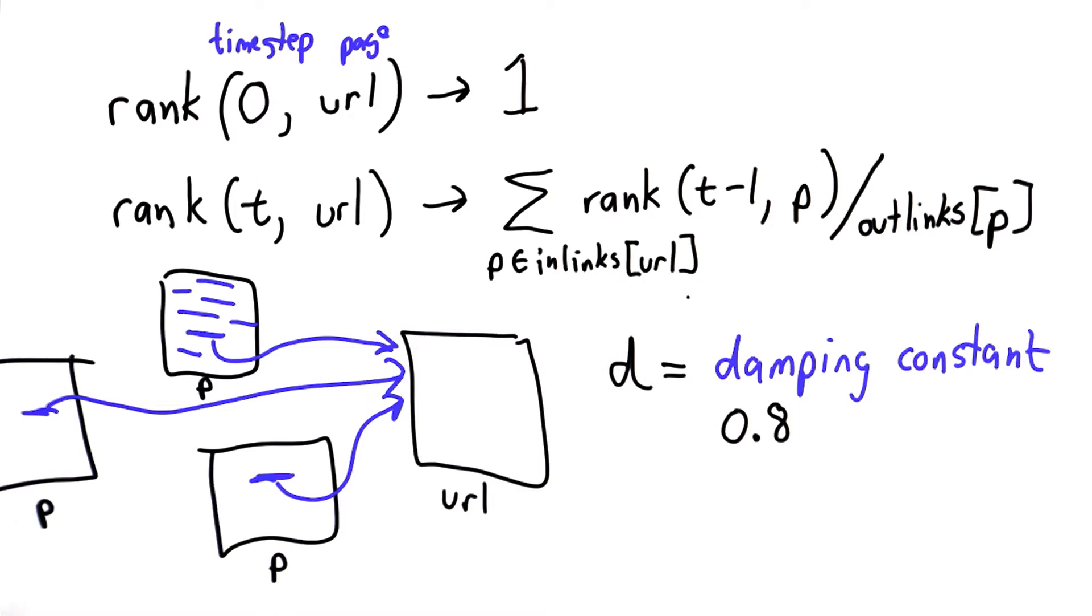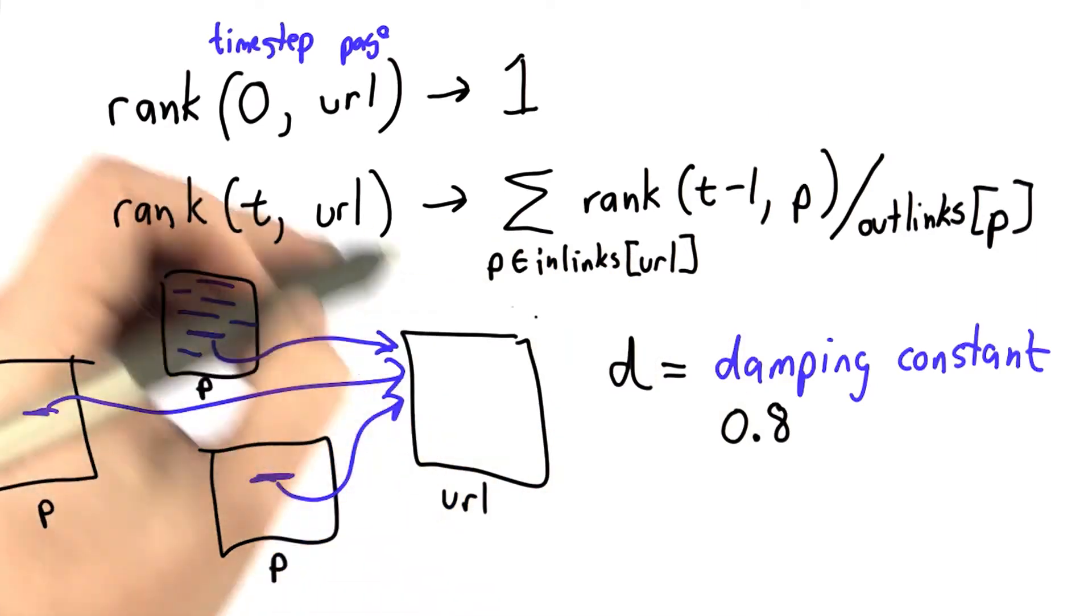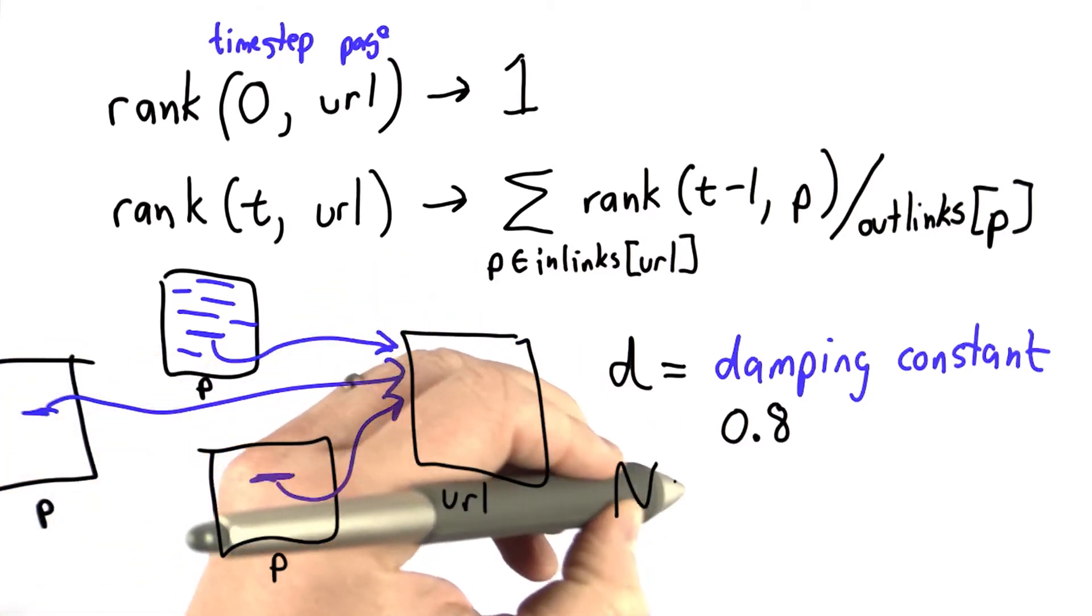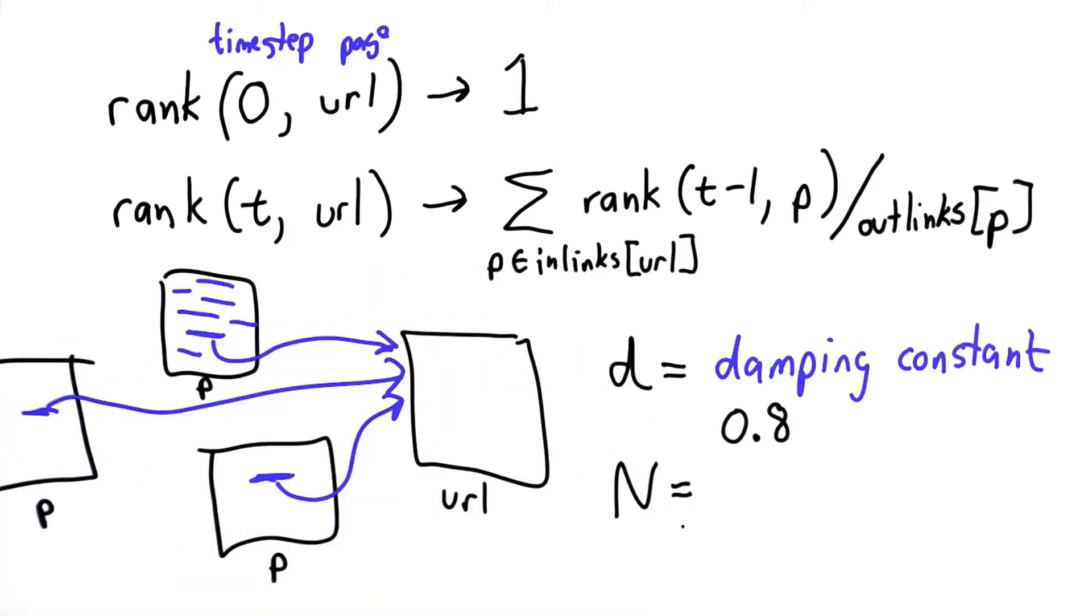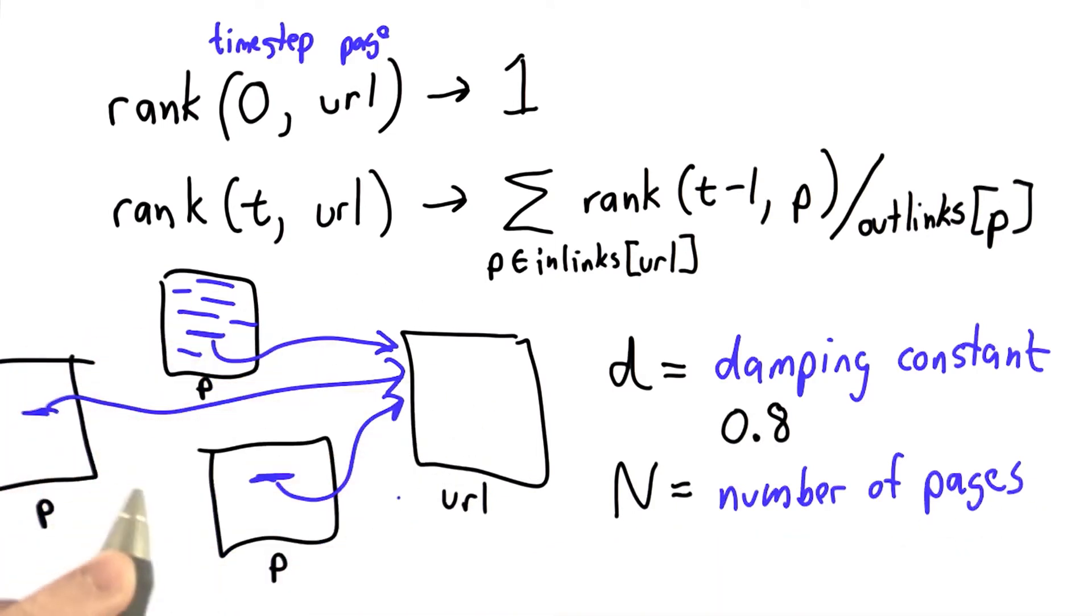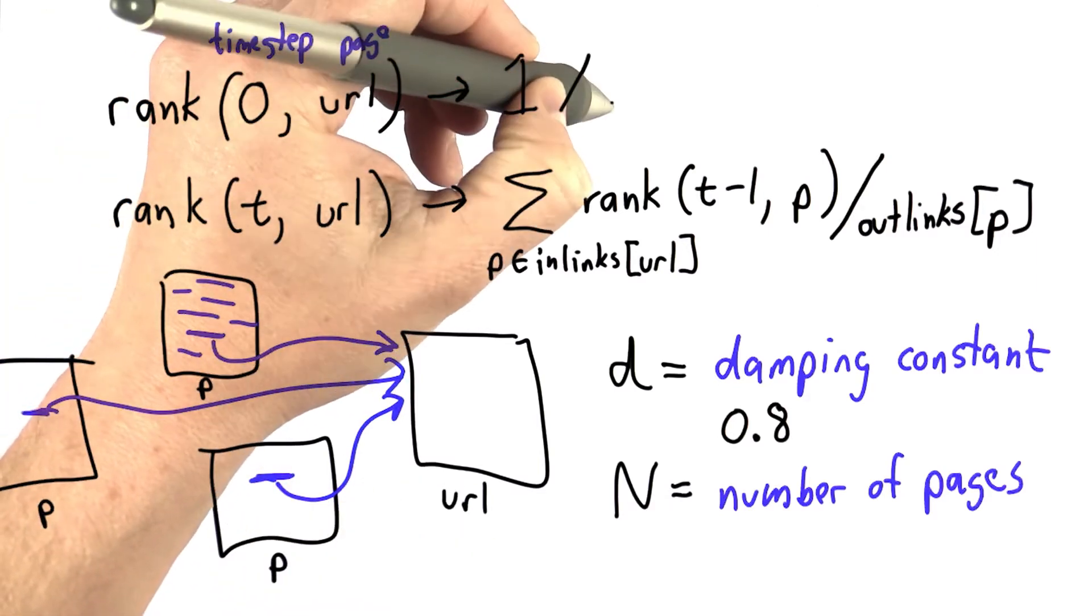Now we're going to change our rank function to take into account that. Instead of starting from 1, we're going to divide the values by the total number of pages. This keeps the ranks in a meaningful range so the sum of the ranks when we start is 1. N is going to be the number of pages in our corpus, and d is the damping constant. We're going to change our initial values to divide them by N.